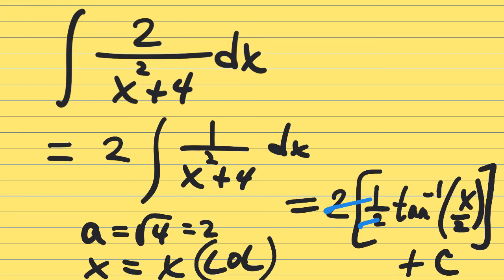Your 2 and a half will cancel. So this gives you a final answer of tan inverse, or arc tan is another way you can write it, it's totally fine. Tan inverse of x over 2 plus c.